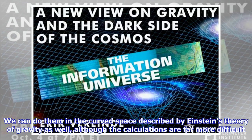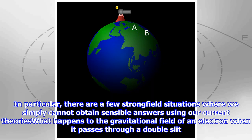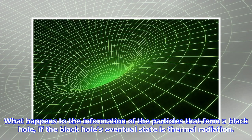Under conventional circumstances, quantum field theory calculations are done in flat space, where spacetime isn't curved. We can do them in the curved space described by Einstein's theory of gravity as well, although the calculations are far more difficult. This semi-classical approach gets us far, but it doesn't get us everywhere.